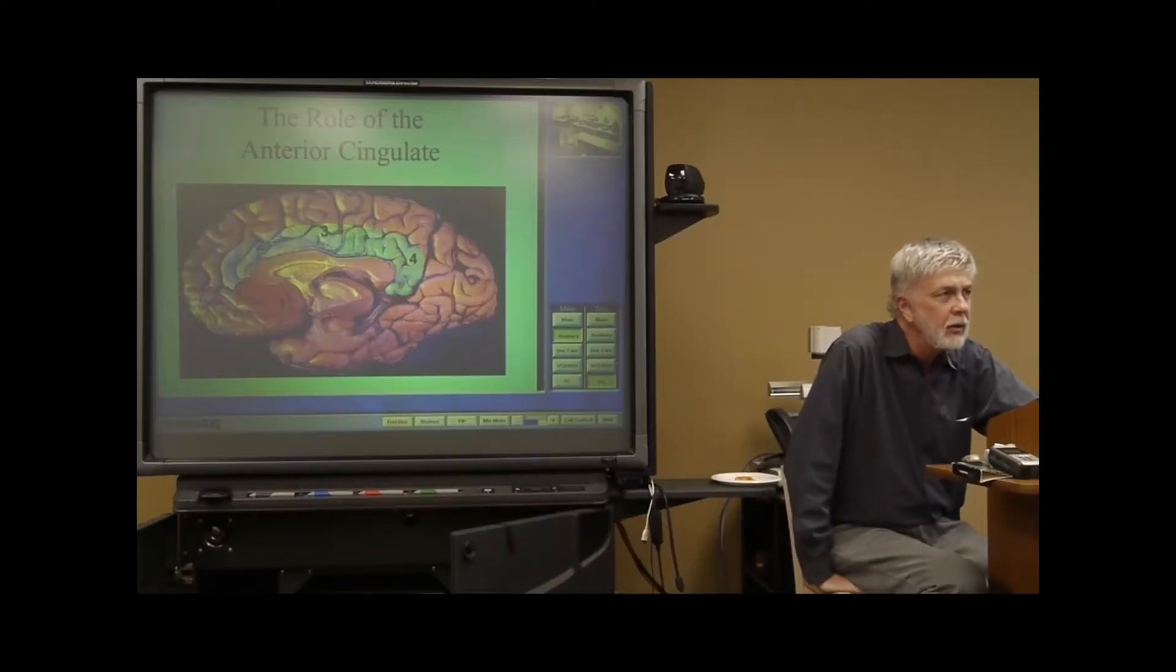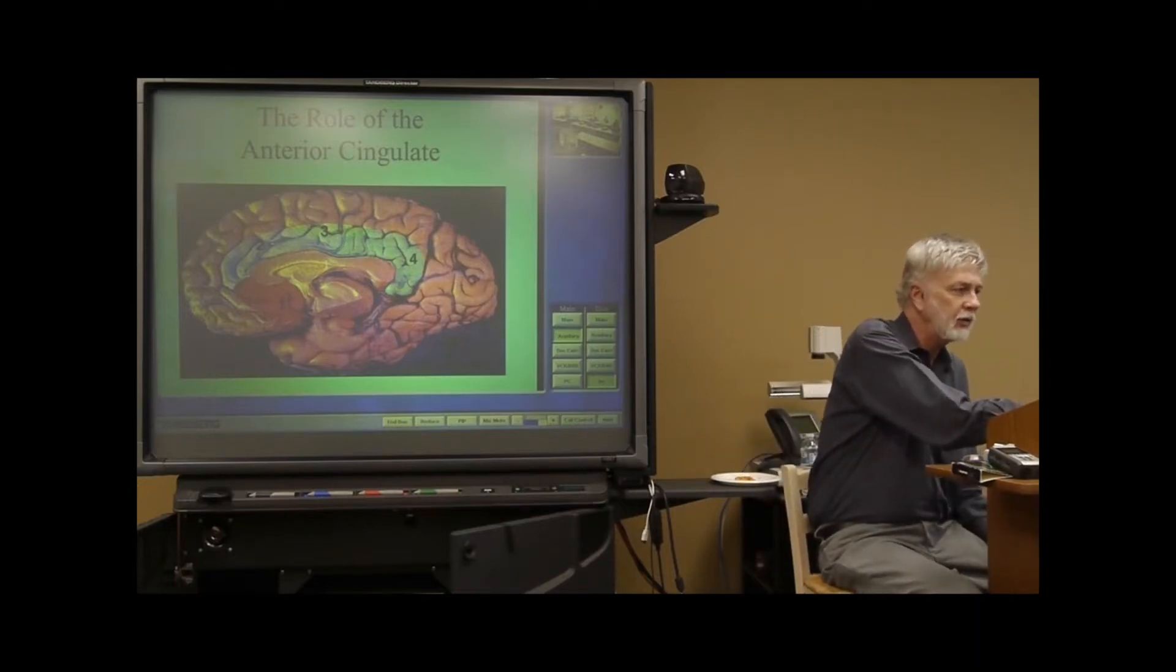Now we're going to go to the next brain structure and brain circuitry. And this is the anterior cingulate gyrus.